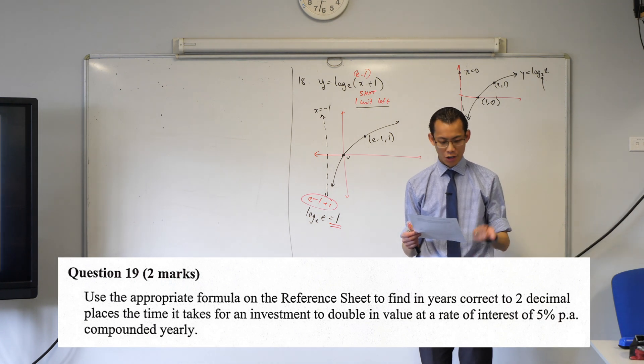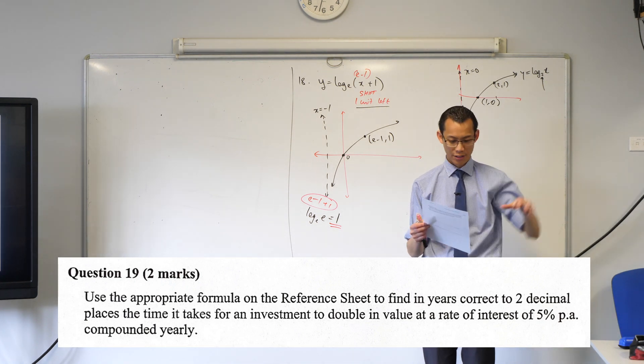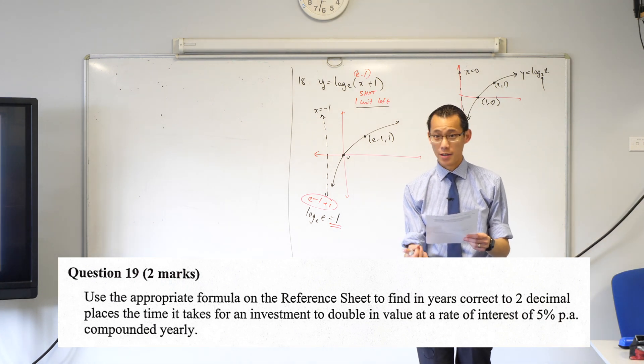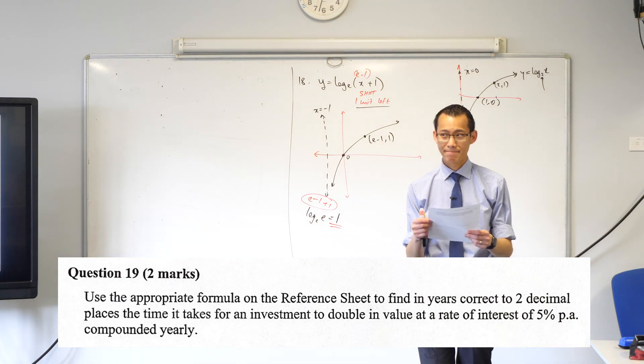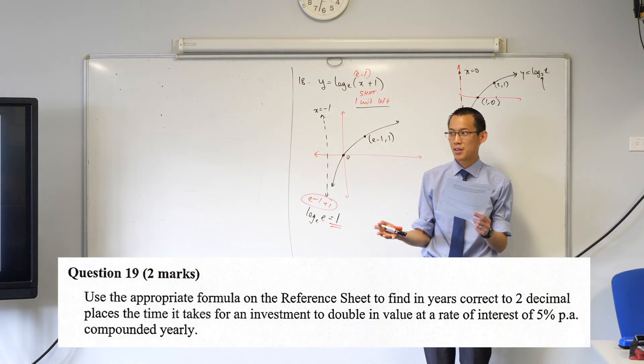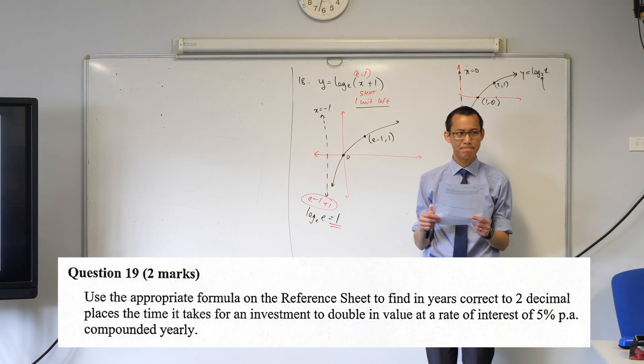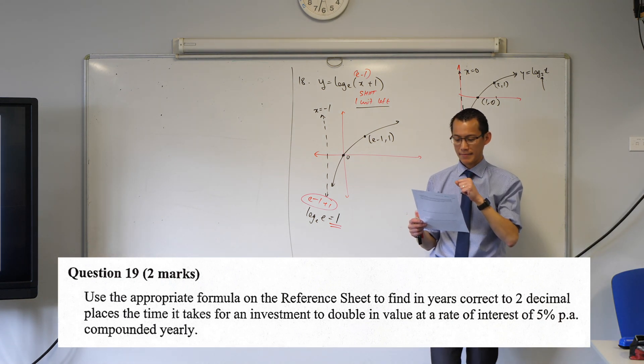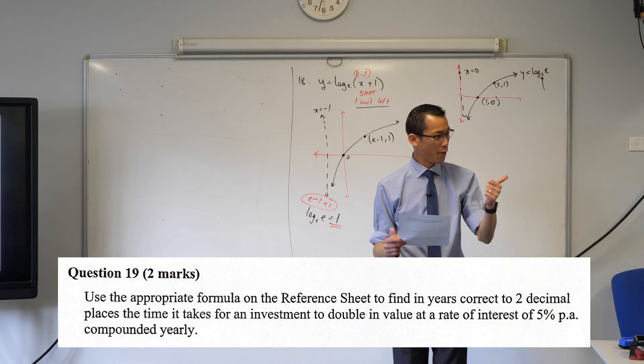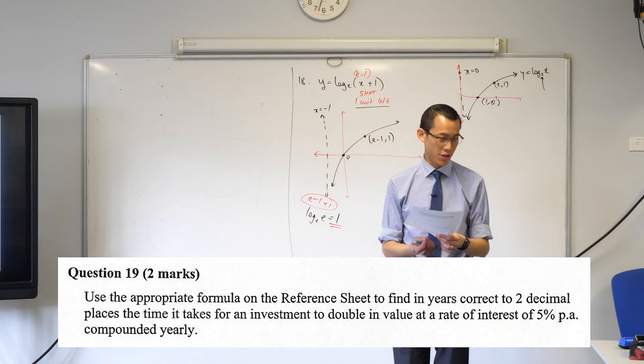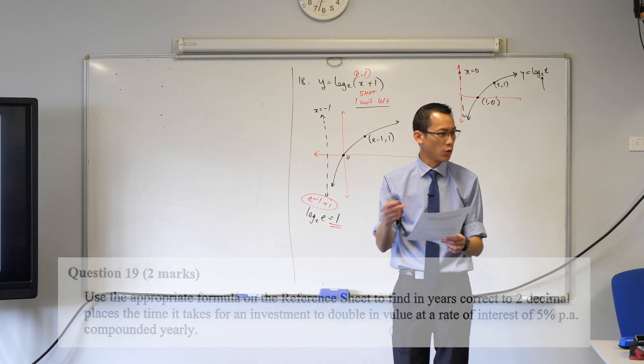Finding years, correct to two decimal places, okay that's less interesting. Here it goes - the time it takes for an investment. So I just want to make sure I've got full attention, because evidently we didn't do well in this question. Time it takes for an investment to double in value at a rate of interest, and then it gives you all the details about the interest.